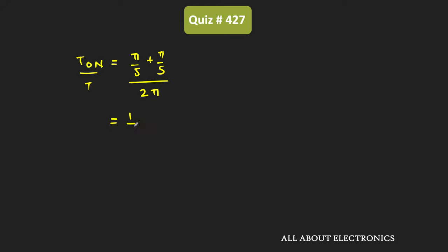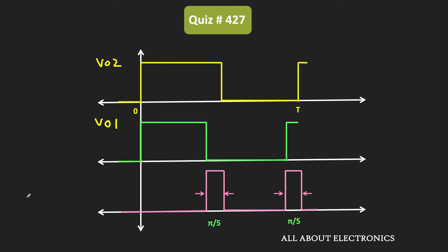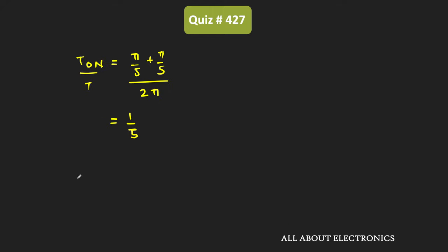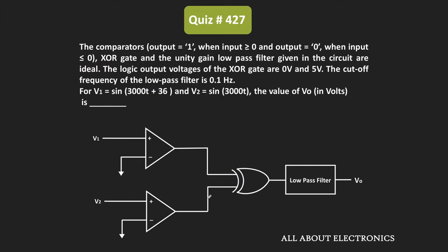Only for one-fifth of the total time duration does the output of the XOR gate remain high. In the question, whenever the output of the XOR gate is high, that corresponds to 5V. The output of the XOR gate is passed through the low-pass filter, so after the filter we get the average value. Therefore, V_average equals 5V × (T_on / T), which equals 1V. So for the given question, the output voltage Vout is equal to 1V.